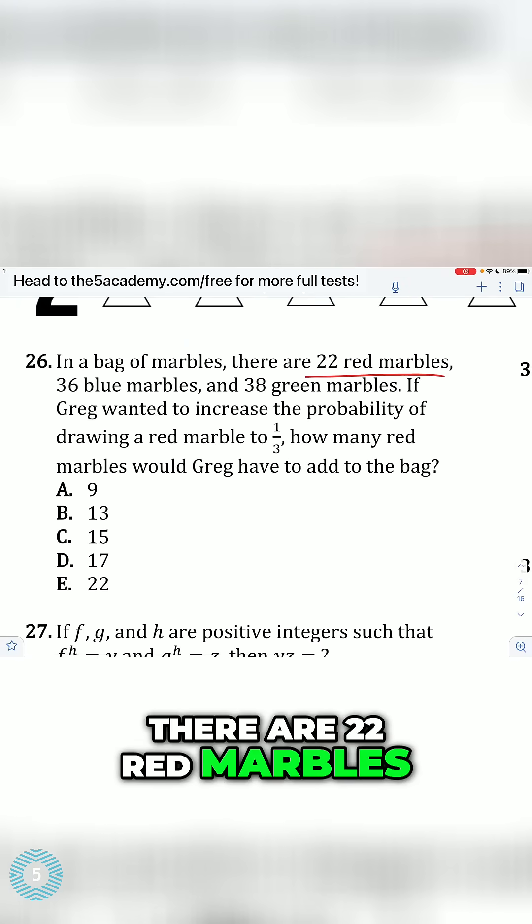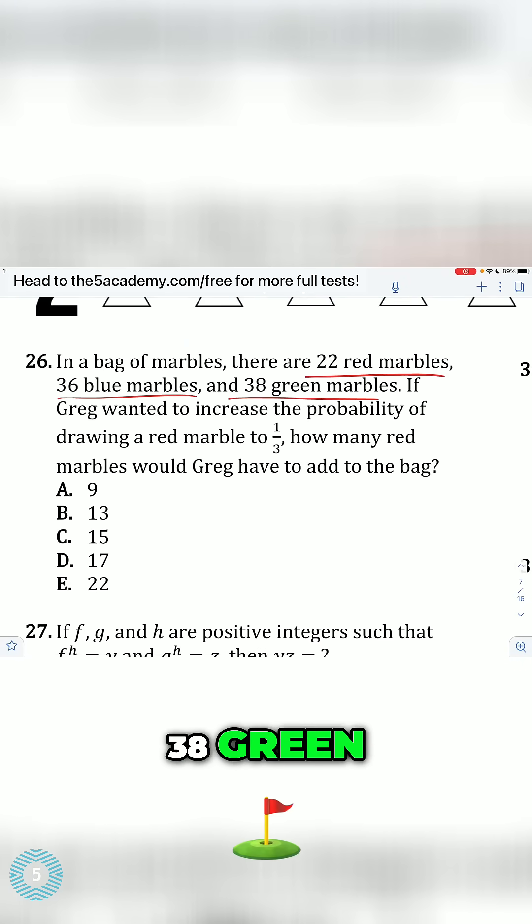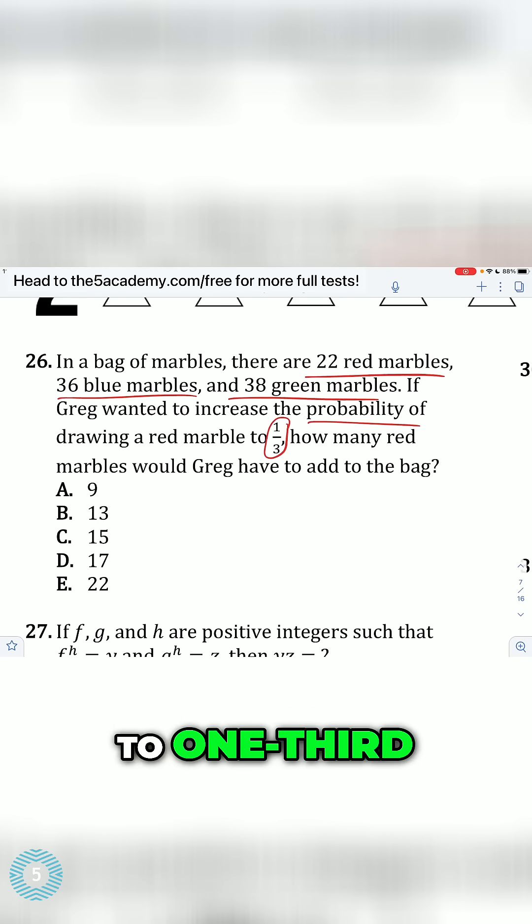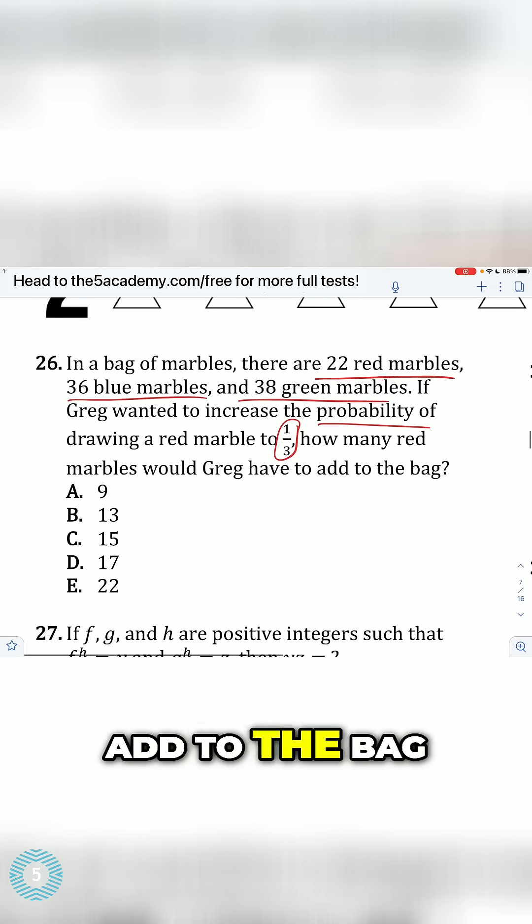In a bag of marbles, there are 22 red marbles, 36 blue, 38 green. If Greg wanted to increase the probability of drawing a red marble to 1 third, how many red marbles would he have to add to the bag?